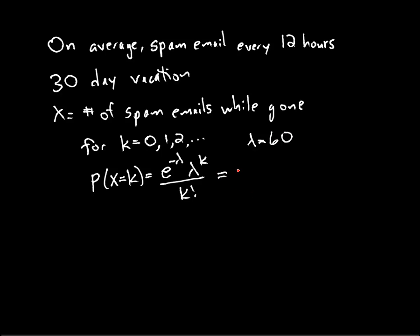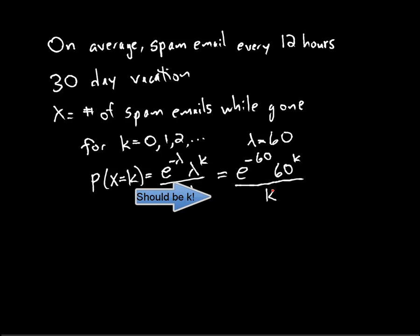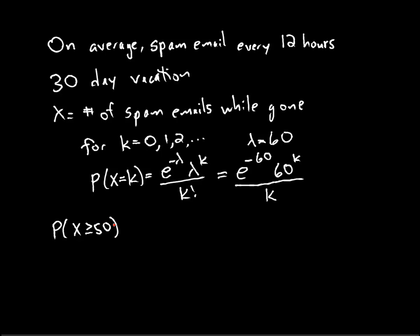So my probability distribution is E to the minus 60, 60 to the K, over K factorial, for K being a non-negative integer. And now we're going to calculate a decimal approximation for the probability that I get at least 50 emails while I am gone.